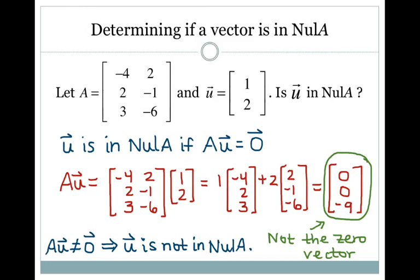Anytime you're asked to determine if a vector is in the null space of A, just multiply it by the matrix. If it equals zero, it is in the null space. If it does not equal zero, then it is not in the null space.